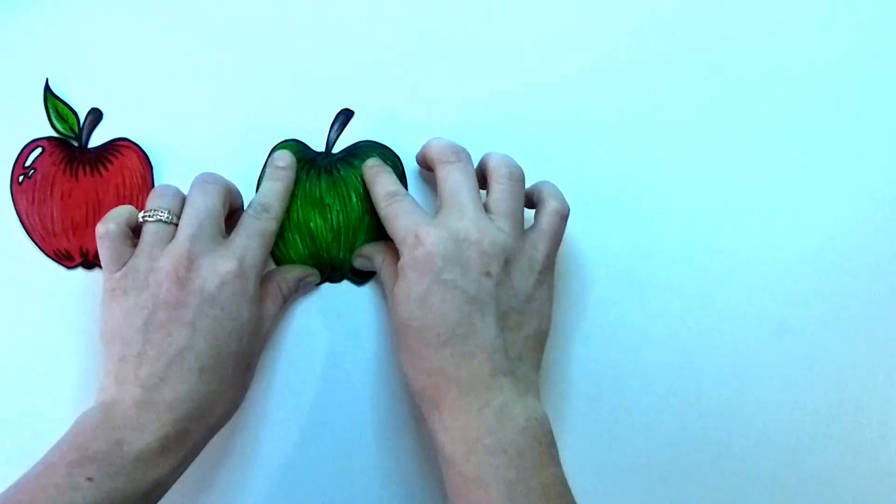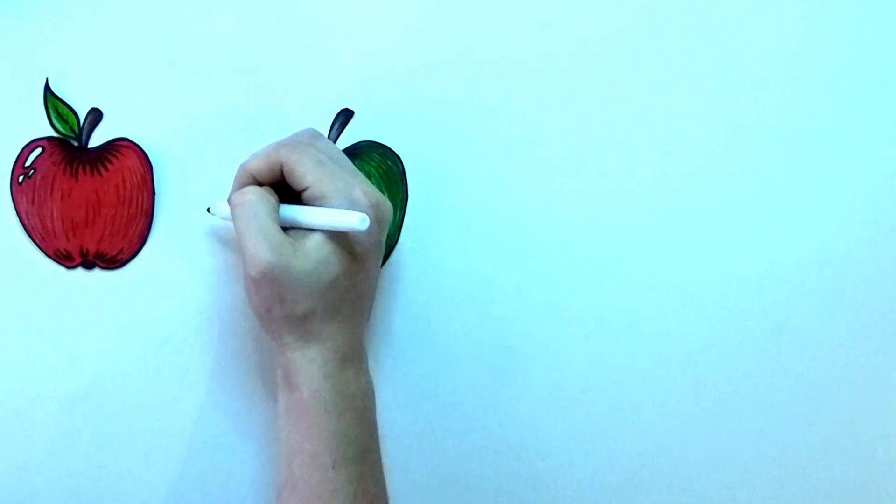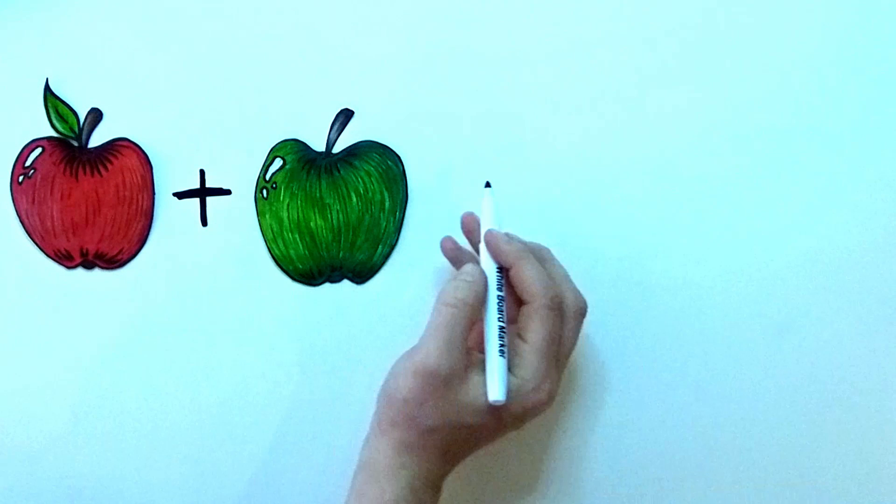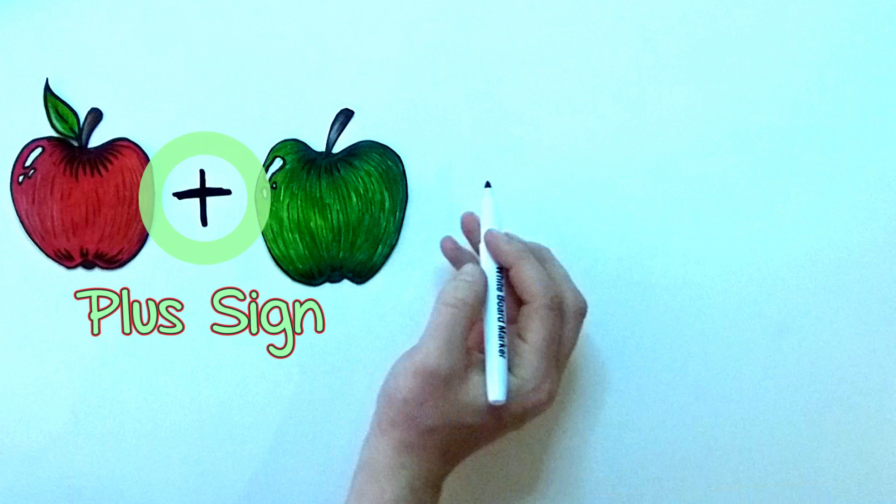Imagine you have an apple, and then a friend gives you another apple. How many apples do you have now? The cross symbol here is called the plus sign. It means we are going to add the numbers together.